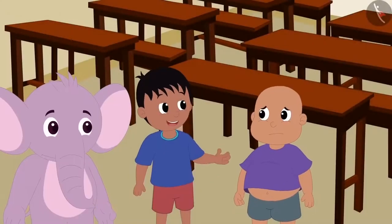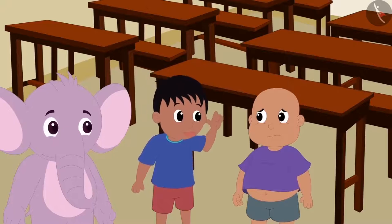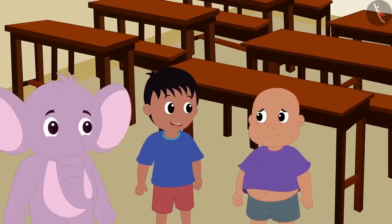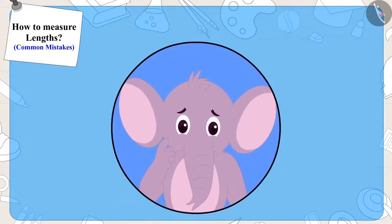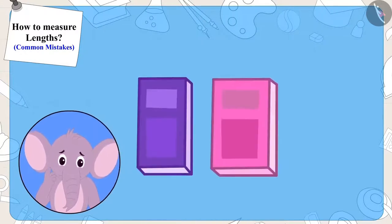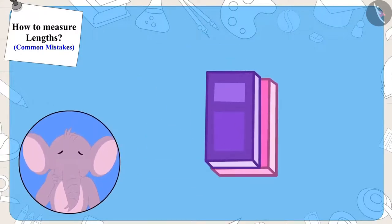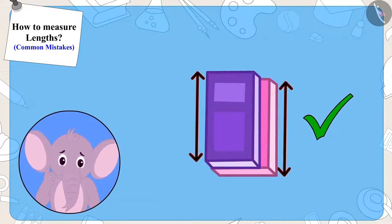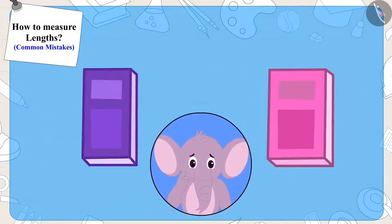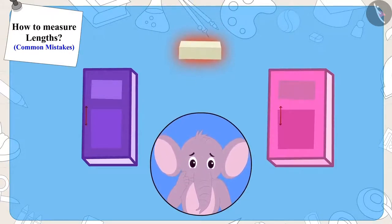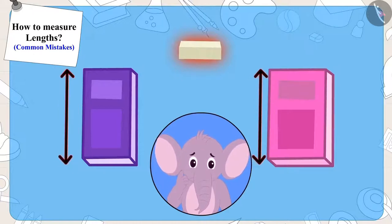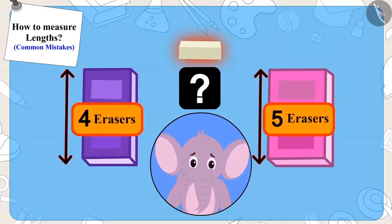Raju started teasing Bablu, saying that his notebook was longer. Appu was doubtful. He immediately kept one notebook above the other and found that both notebooks were of the exact same length. But Appu was shocked to know that if they had used the same eraser to measure both notebooks, how had the measurements turned out to be different?